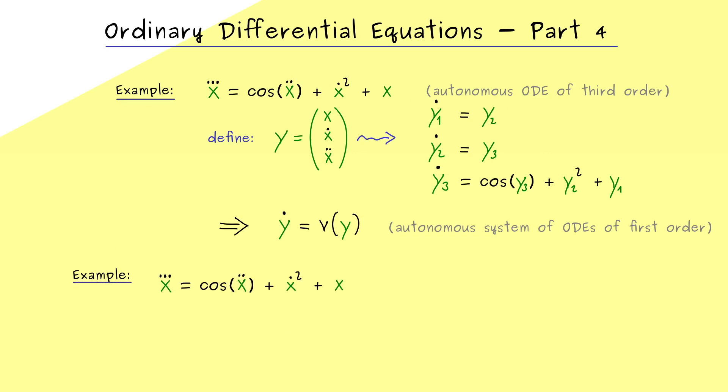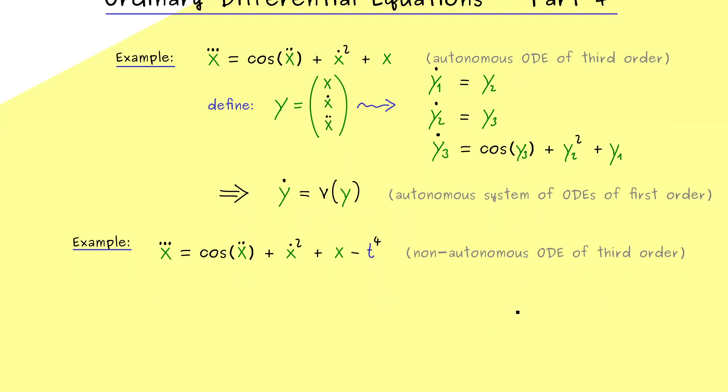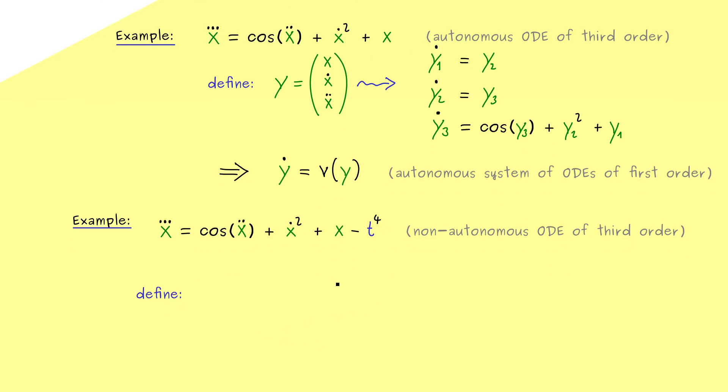So let's say we have a similar example as before but now also t occurs on the right hand side. So maybe we find minus t to the power 4 here. Hence this is now a non-autonomous ODE but still of third order. Therefore we could do the same procedure as before to get it to first order but still it would be non-autonomous. So we have to do one step more to get rid of this t here.